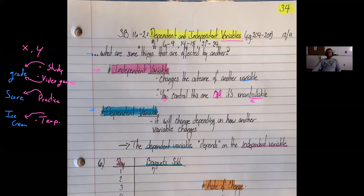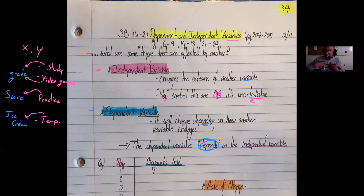That leads us to the dependent variable, which is the variable that will change depending on how another variable changes. In short, the dependent variable depends on the independent variable. A variable will either be influencing another variable—making it independent—or it will be influenced and depend on what some other variable does.